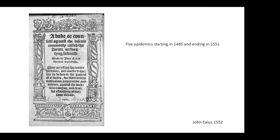This treatise was written by John Keyes in 1552 — a book or council against the disease commonly called the sweat or the sweating sickness, in which he describes the disease. It was the first treatise written in English describing one particular disease. There were five epidemics of the sweating sickness starting in 1485 and ending in 1551, and it's the 1551 epidemic that John Keyes observed in Shrewsbury that he wrote about.